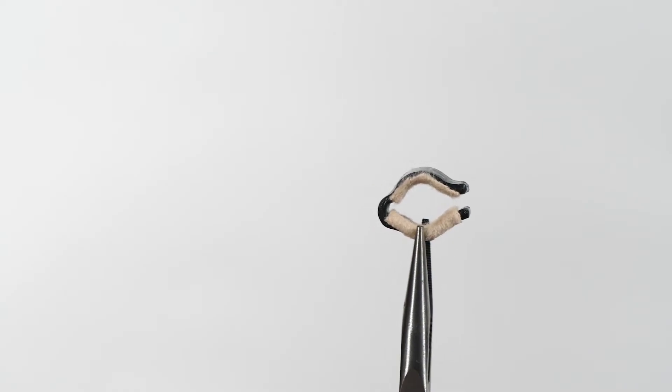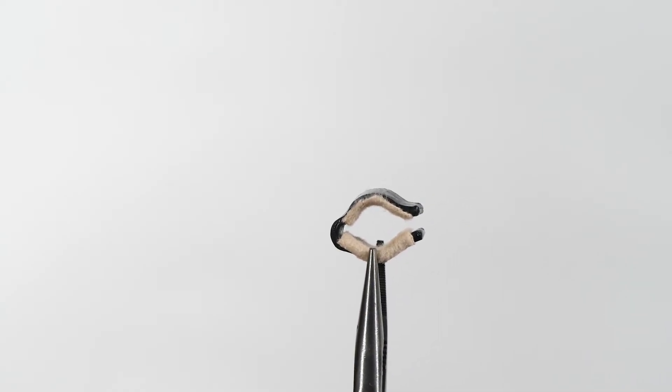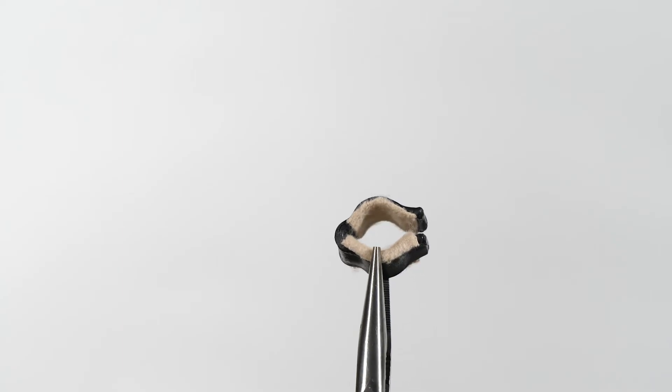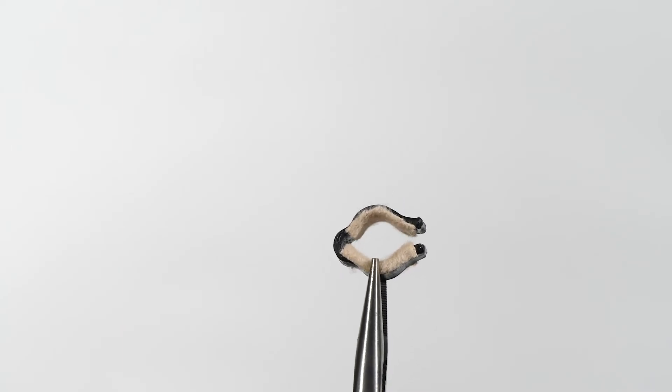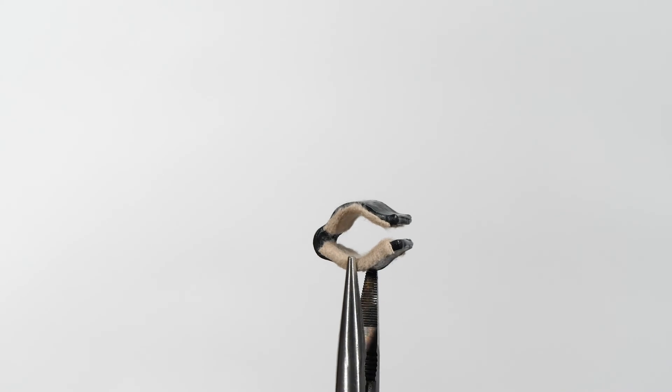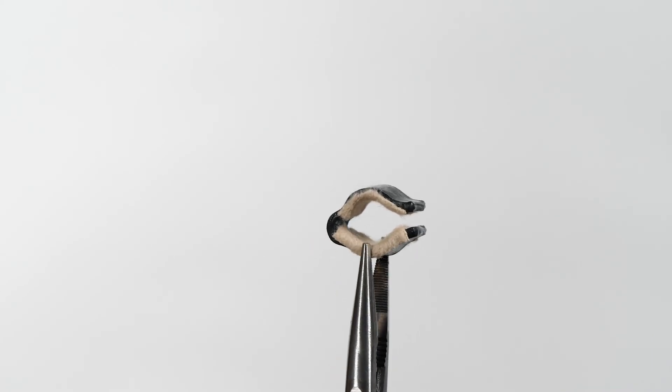Here you can see a fully completed pulley protection splint, molded with the collateral bulges on the side, with moleskin on the inside to protect breakdown of the skin while it's on the finger.